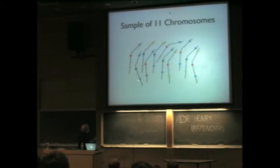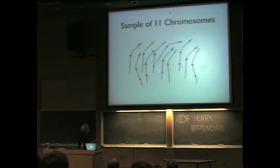Some people have yellow, some people have blue — yellow, blue, blue, blue, yellow. There's a second SNP position just before the end; it's a red-green SNP.